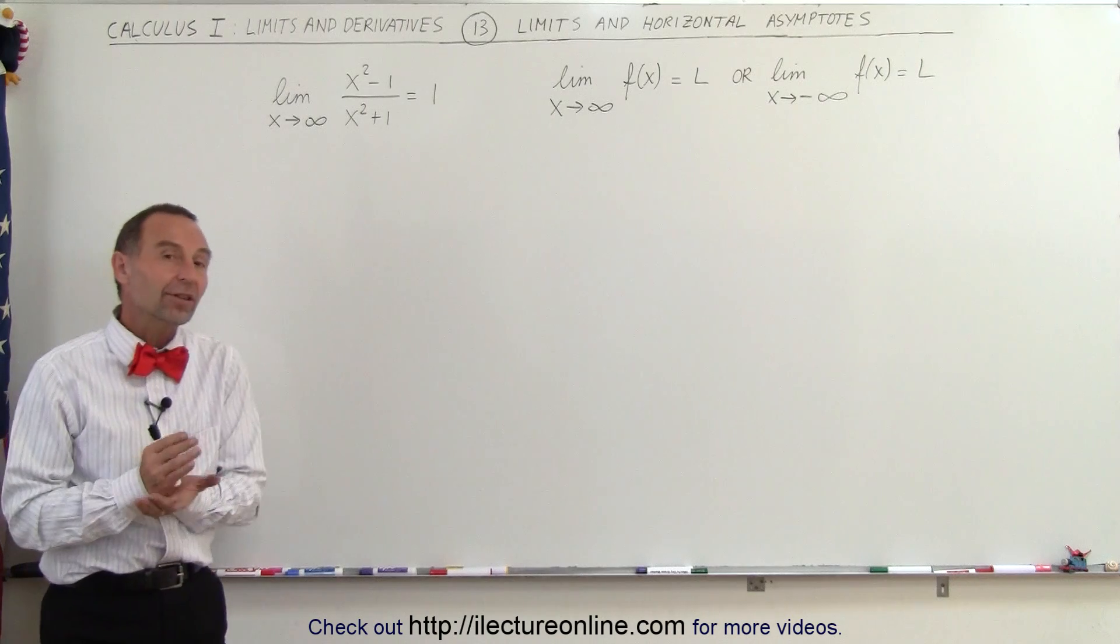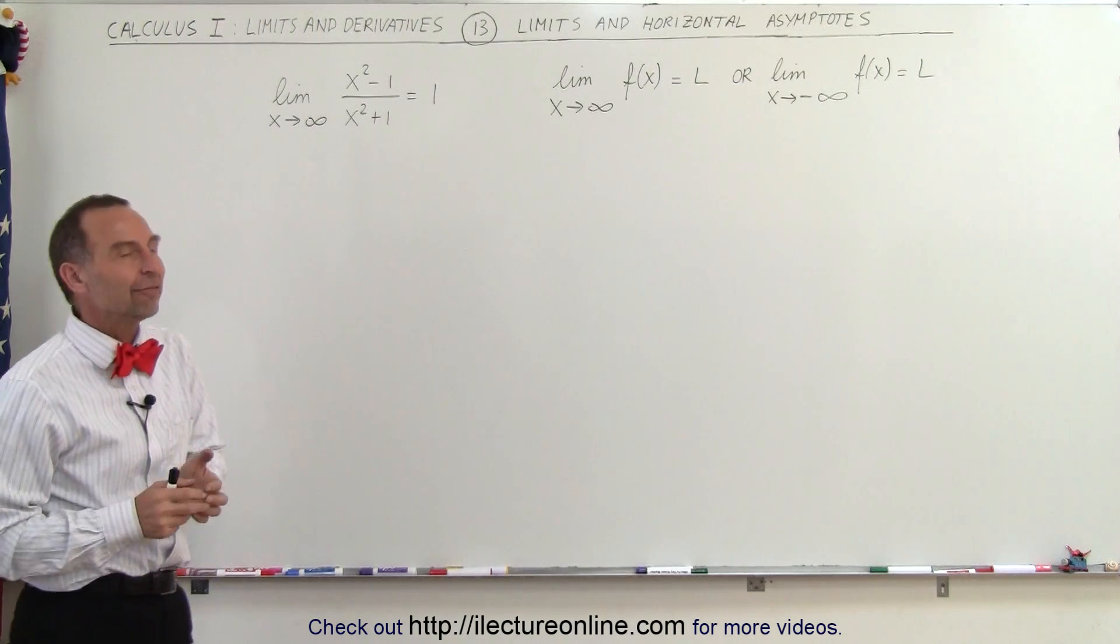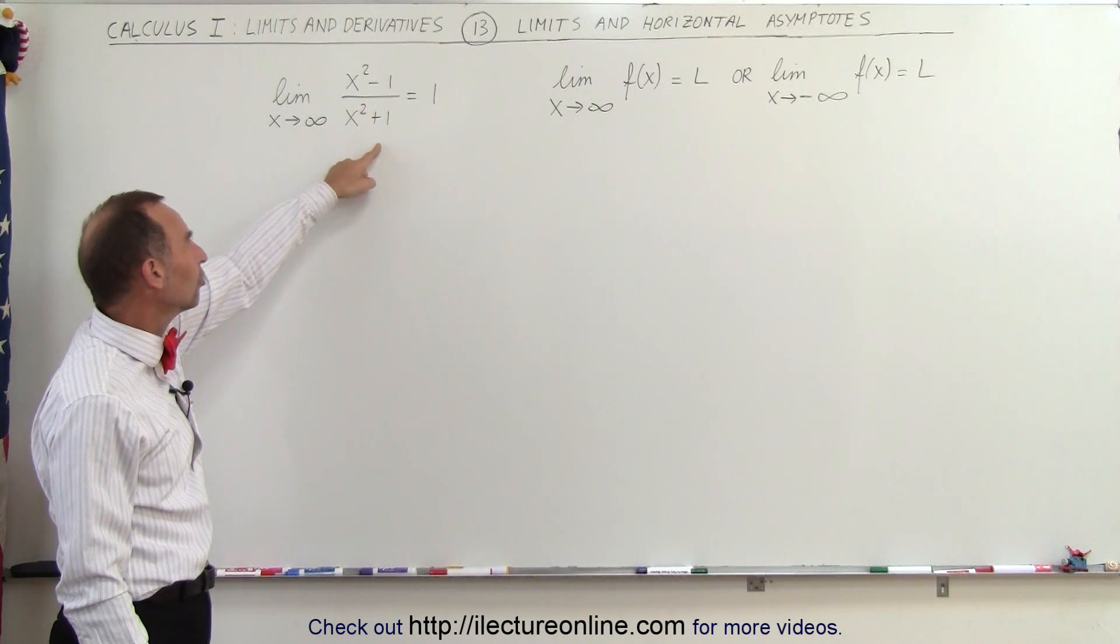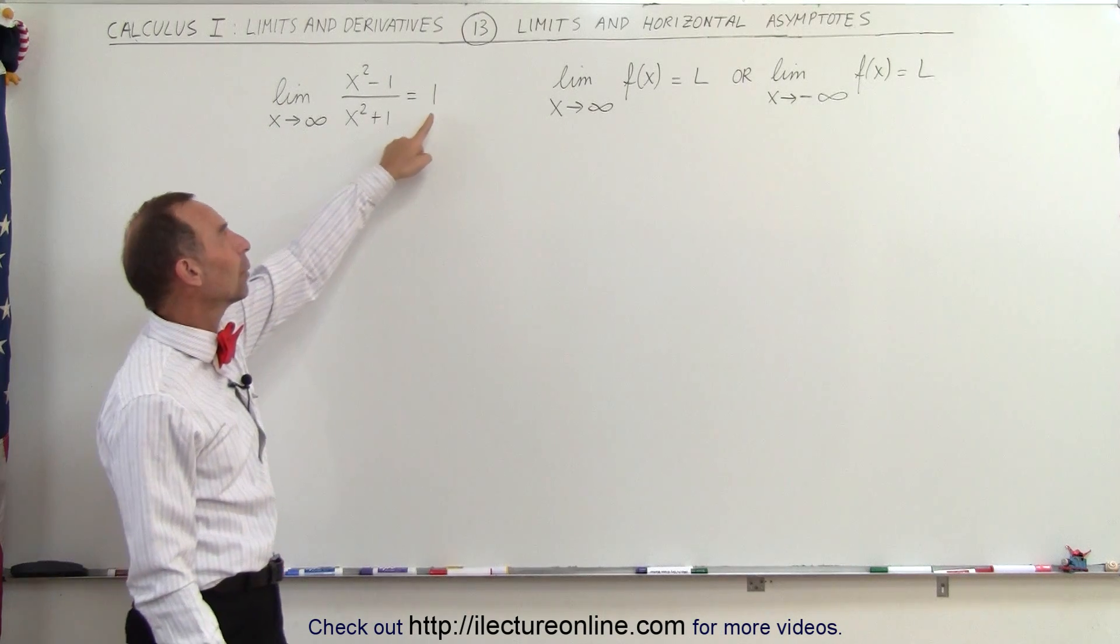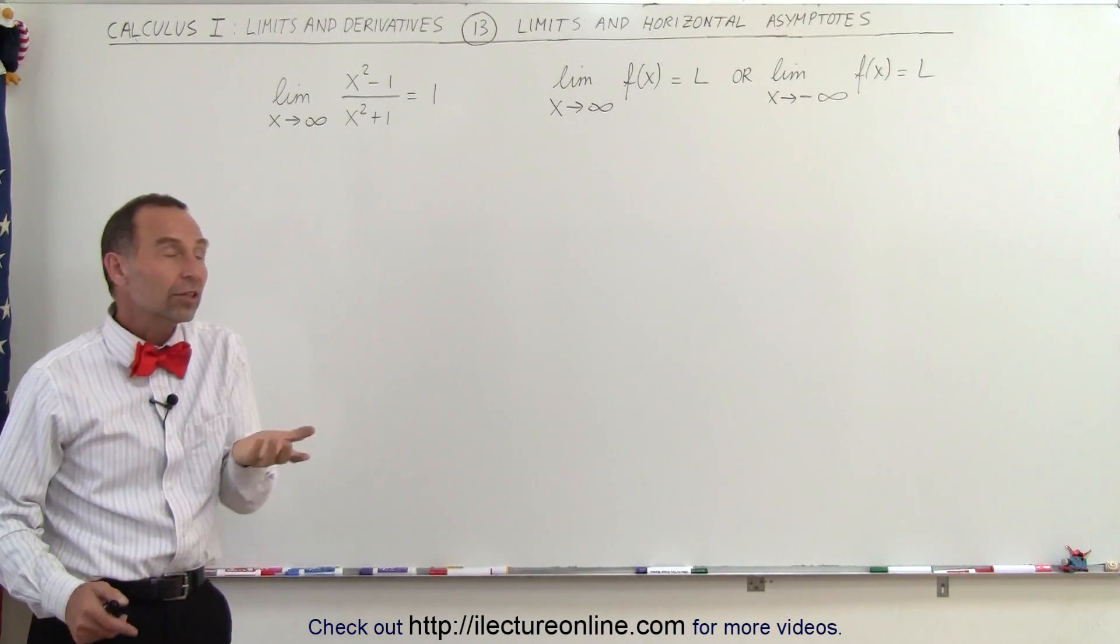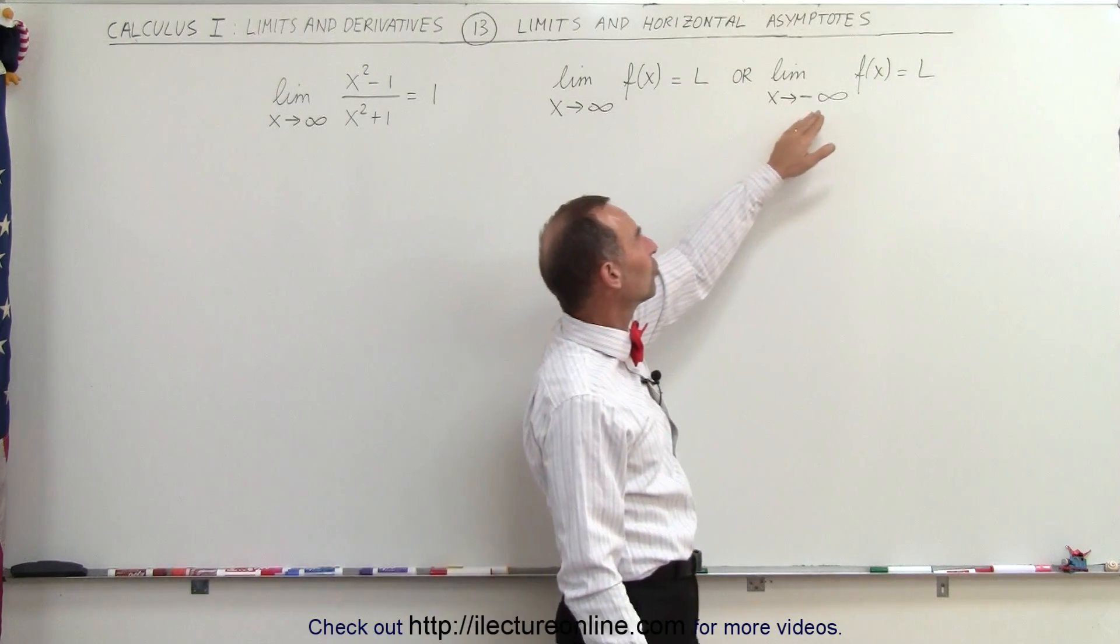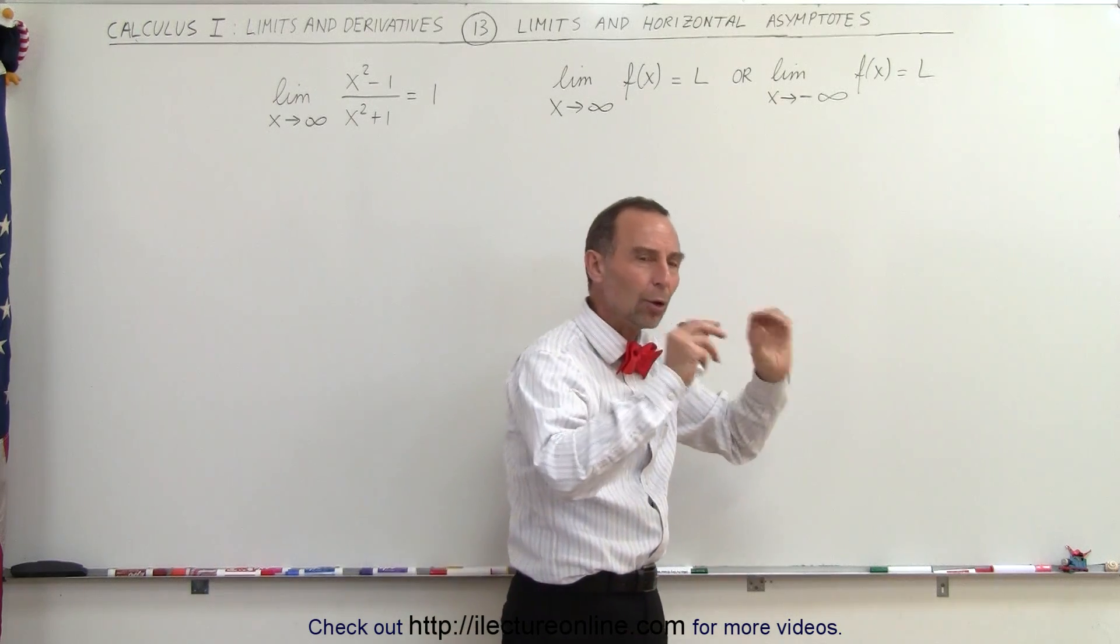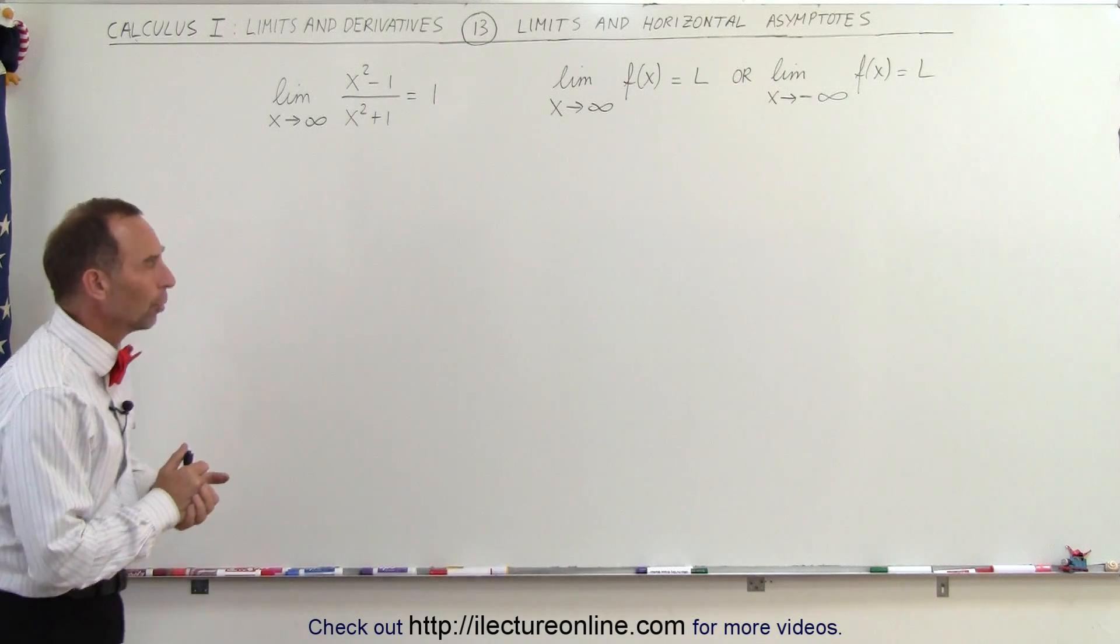Typically you get a situation like that when x approaches infinity or negative infinity. So in this case where the function is x squared minus 1 divided by x squared plus 1, when we take the limit as x approaches infinity we claim that will approach 1. So the condition is as x approaches infinity or as x approaches negative infinity, the function will approach a constant number or a horizontal line, therefore a horizontal asymptote.